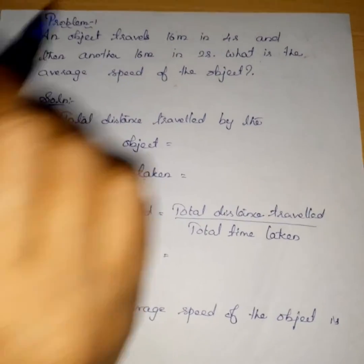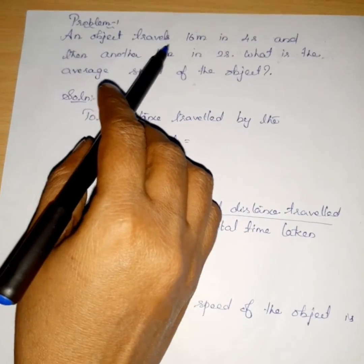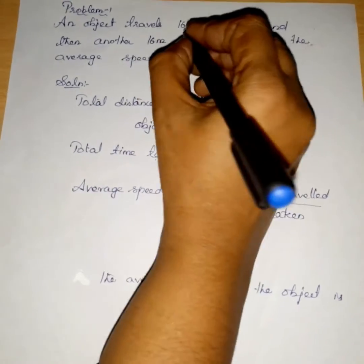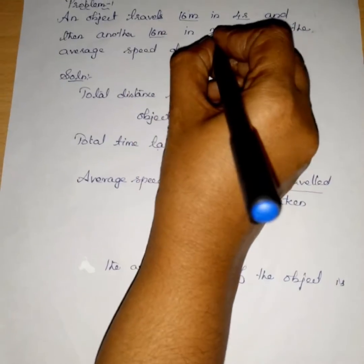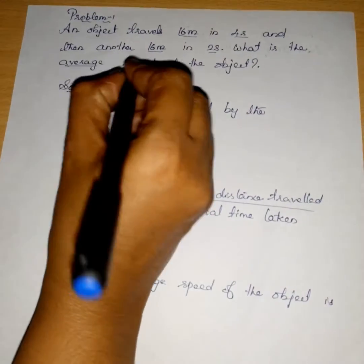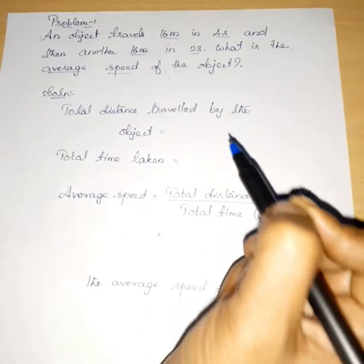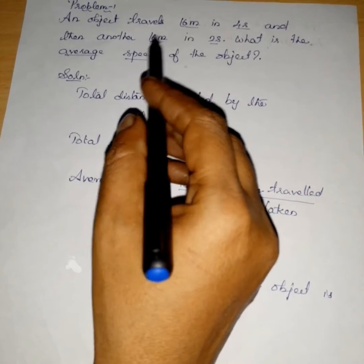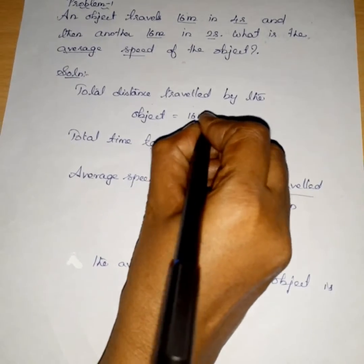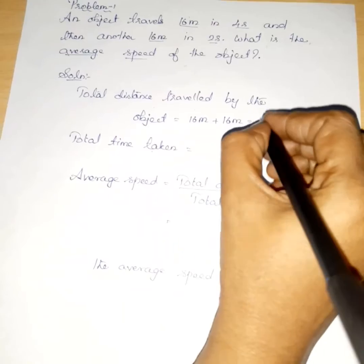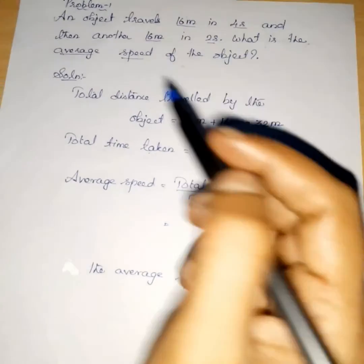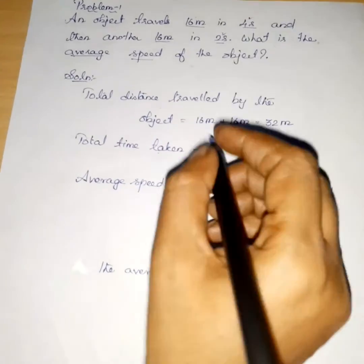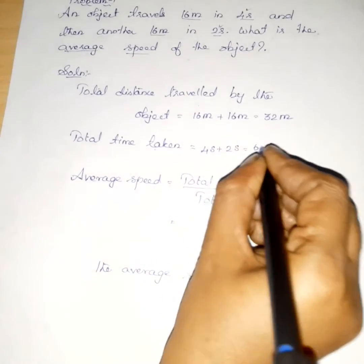Solved problem number one: An object travels 16 meters in 4 seconds and then another 16 meters in 2 seconds. What is the average speed of the object? Solution: Total distance = 16 m + 16 m = 32 meters. Total time = 4 s + 2 s = 6 seconds.